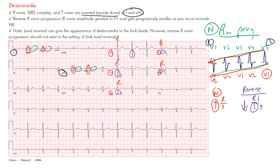What we want to see is that the R wave amplitude is greatest in V1 and gets progressively smaller as we move to V6. One important thing to note: lead reversal can give a similar appearance to dextrocardia in the limb leads. However, the reverse R wave progression does not exist in limb lead reversal — and that's what differentiates it. So look for the inversion of the P wave, QRS complex, and T wave in the lateral limb leads, as well as the reverse R wave progression, for dextrocardia.